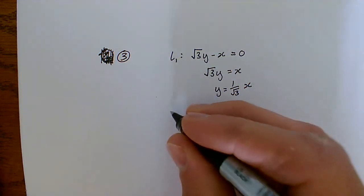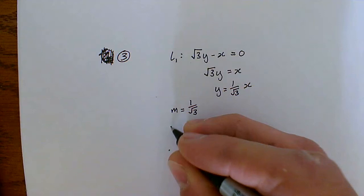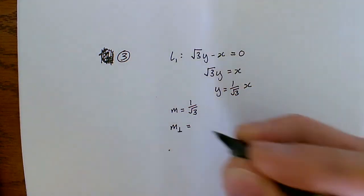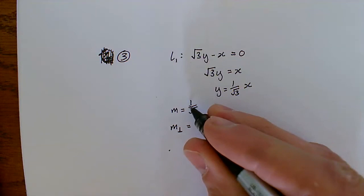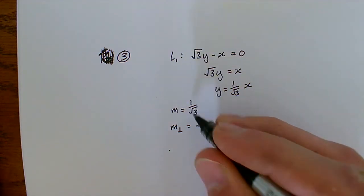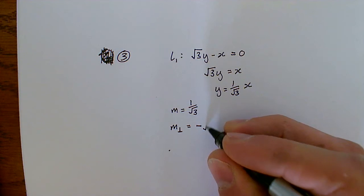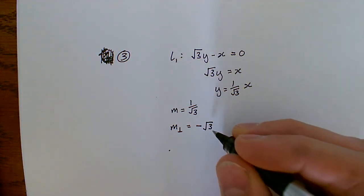So the gradient here is 1 over root 3. So my perpendicular gradient is going to be, this is positive, so it's going to be negative. 1 over root 3, the reciprocal, or flipping that upside down is root 3 over 1, or just root 3. So my perpendicular gradient is minus root 3,